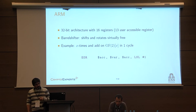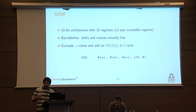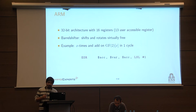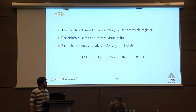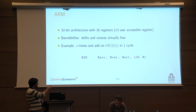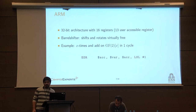A little bit of background about ARM: it is a 32-bit architecture composed of 16 registers, of which you can manipulate 13. One of the most powerful tools available on ARM is the barrel shifter, which allows you to perform shifts and rotations virtually for free on one of the two operands. For example, a line that performs two operations — a multiplication by X and an addition — can be done with only one clock cycle due to this barrel shifter.